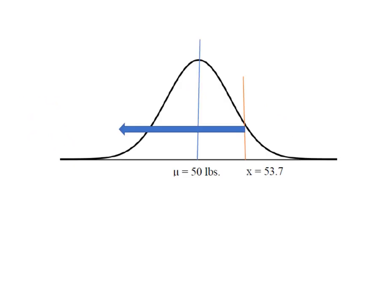So when we come back over here, what Minitab told us is that the probability that our value of x will be below this 53.7 pounds is 0.891274.